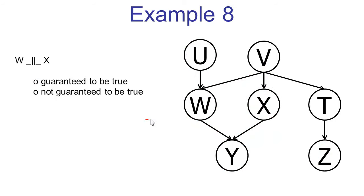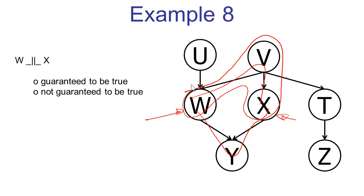Now we're asked about two different variables, w and x. There are two paths connecting w and x. Let's first look at the top path, w, v, x, which consists of just one triple. This one triple is a common cause with the middle node unobserved. This means this triple is an active triple. It's the only triple along the path, which means the entire path is active. Once we find an active path, we know that just based on the graph structure, we cannot guarantee that the independence is true.